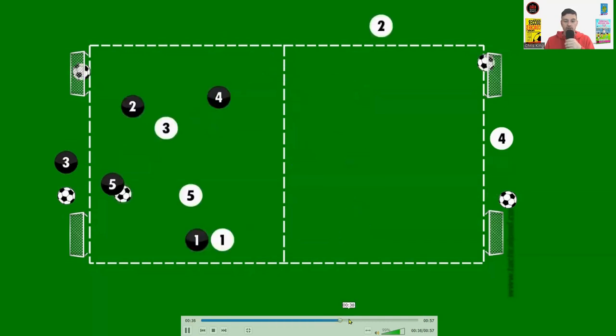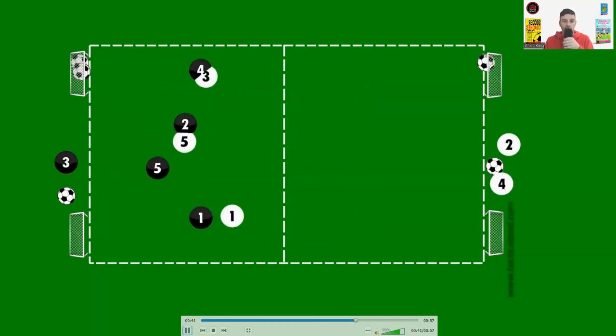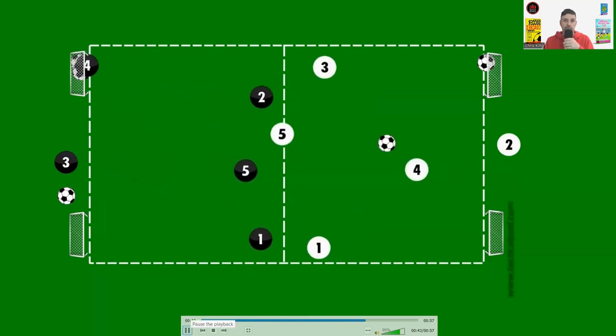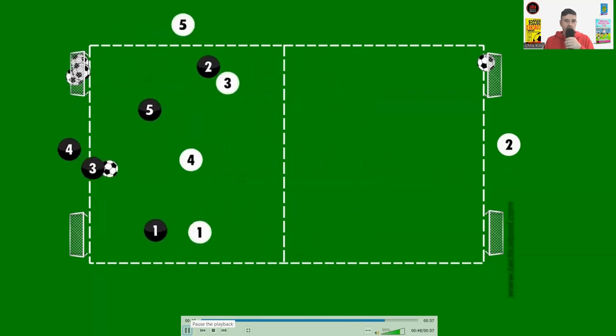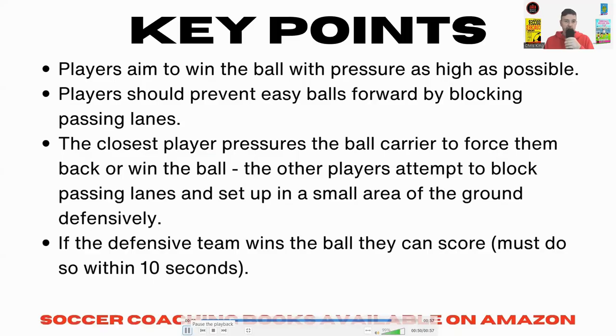Great through ball there by number 3. Number 5 finishes—boom—and makes the recovery run. Fantastic play. This is all about pressing, so players aim to win the ball with pressure as high up as possible. Don't sit off. Get those players to push forward as quickly as they can, get organized, push over into the danger area. There's a spare player on the other side—don't worry too much. You can always adjust and move over as the ball goes over.